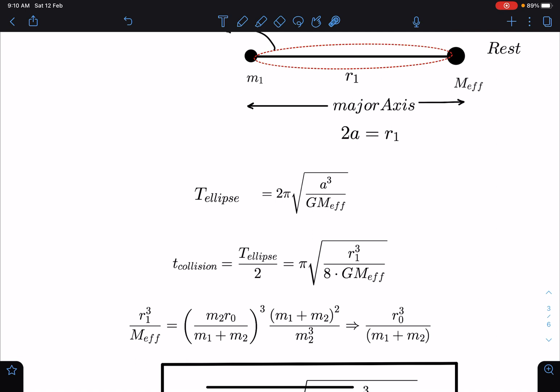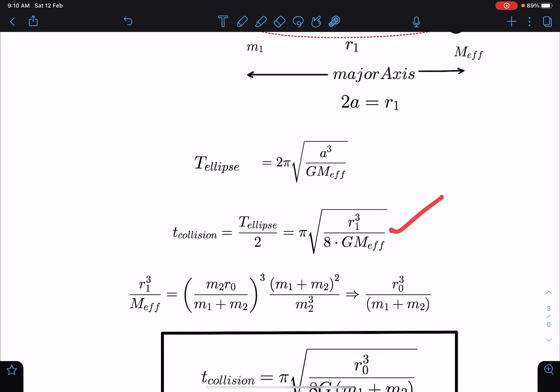So here if I substitute the value of m effective and if I substitute the value of r1, this is working here - you can check this is the working. I have calculated the value of r1 cubed by m effective only because remaining are constant. So r1 cubed and here m effective value I can substitute. If I substitute and simplify I am getting this value as r0 cubed by (m1 plus m2). And when I substitute this value in this equation I am going to get...